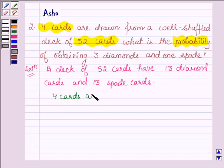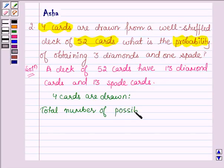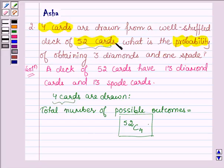This implies total number of possible outcomes is equal to 52C4. This is the total possible number of outcomes when 4 cards are drawn from 52 cards.